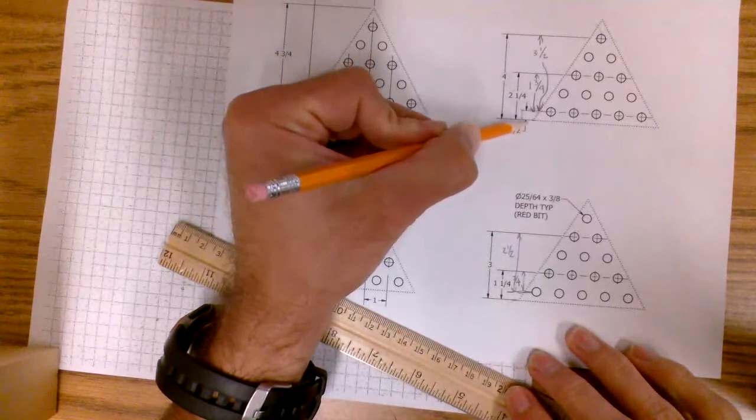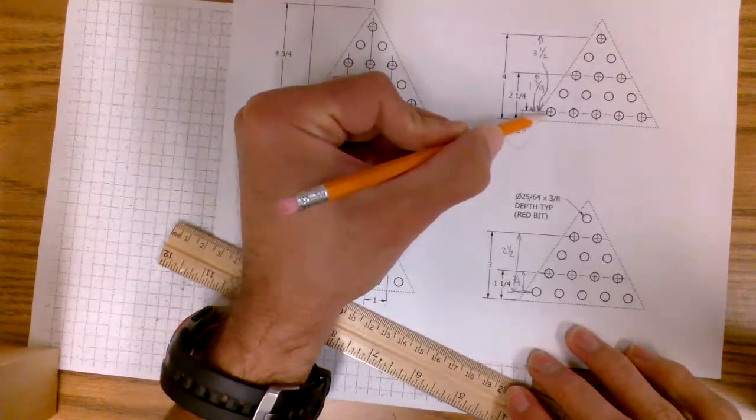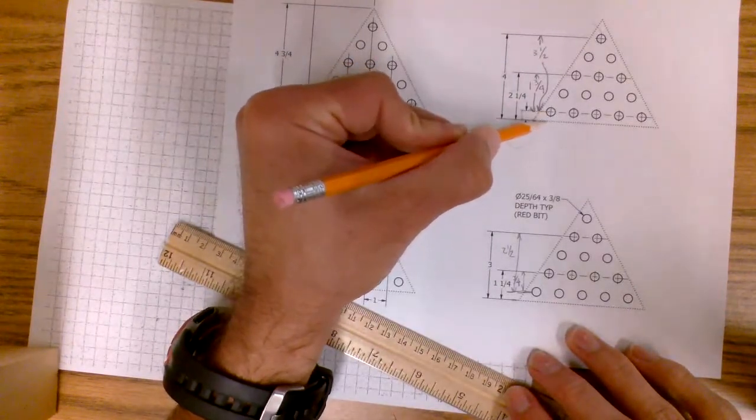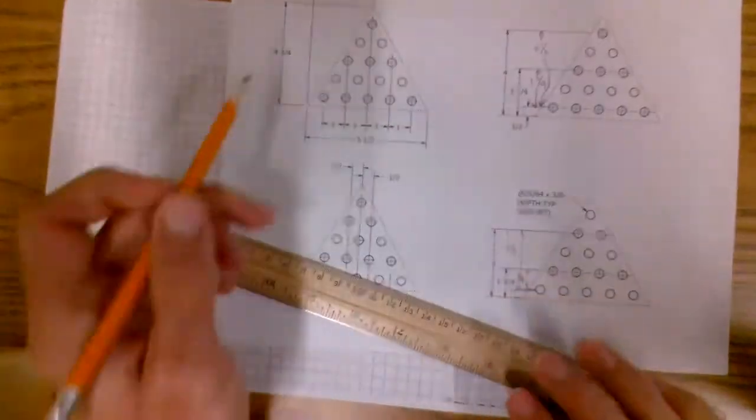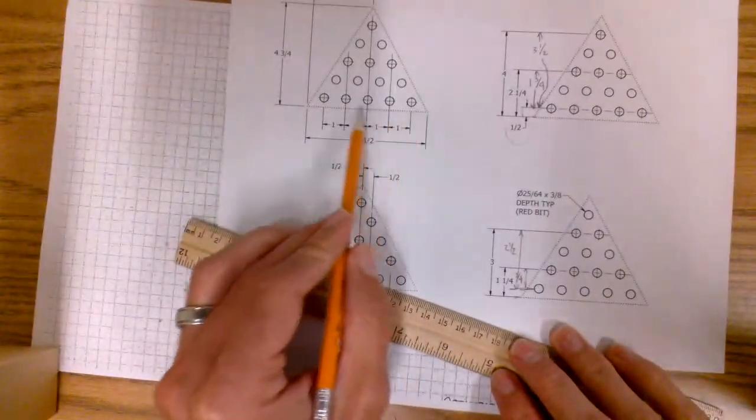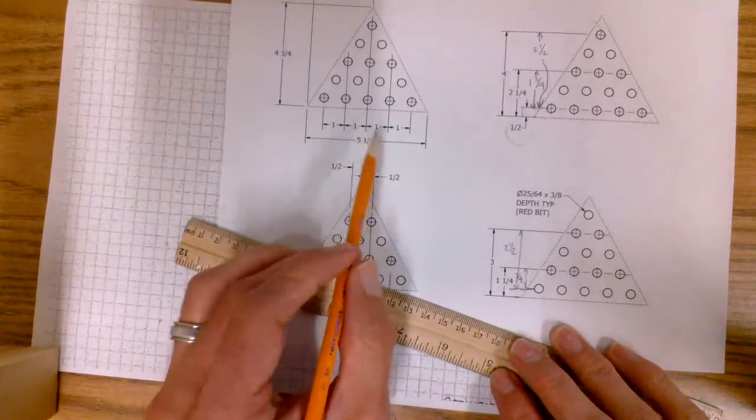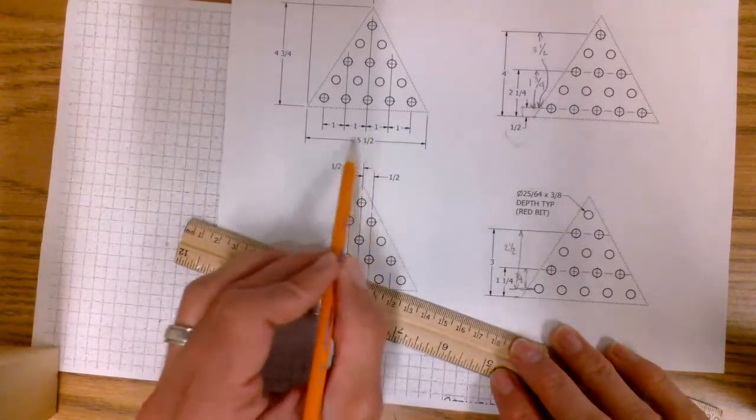But let's make sure. So back over here, we have between the hole and the border, it's half an inch. And right here, that bottom edge of the triangle, we know is 5½ inches.